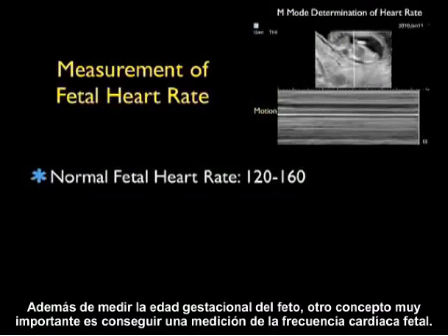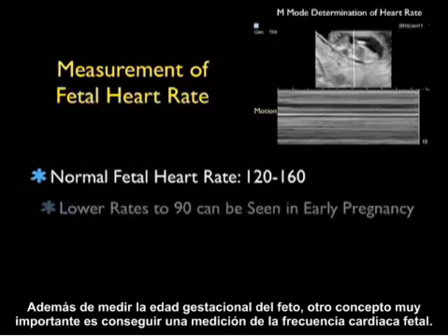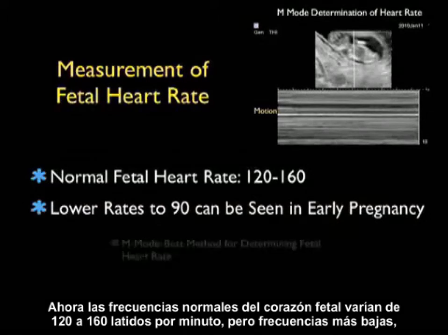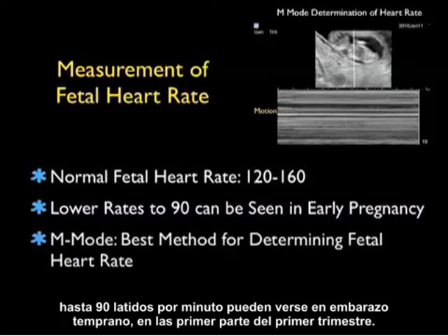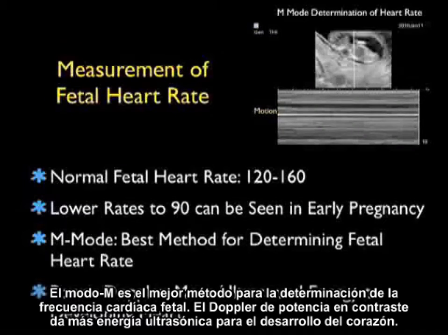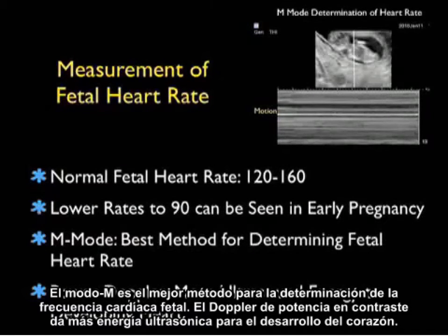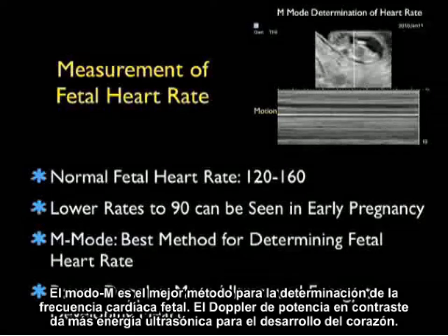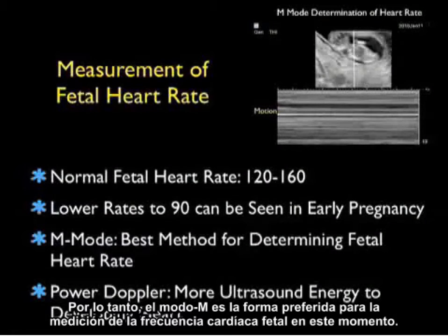In addition to measuring the gestational age of the fetus, another very important concept is to get a measurement of the fetal heart rate. Normal fetal heart rates range from 120 to 160 beats per minute, but lower rates down to 90 beats per minute can be seen in early pregnancy in the early parts of the first trimester. M-mode is the best method for determining fetal heart rate. Power Doppler, in contrast, gives more ultrasonic energy to the developing heart, so M-mode is the preferred way of measuring the fetal heart rate.